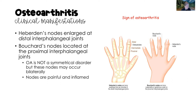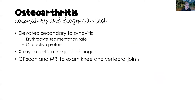The nodes are very painful and they do become inflamed, showing that localized inflammation we see with osteoarthritis. As far as laboratory and diagnostic tests, we can see an elevated erythrocyte sedimentation rate and C-reactive protein. Those laboratory tests are always elevated when there is inflammation in the body, so we will see those in osteoarthritis secondary to synovitis — that inflammation of the synovial fluid.